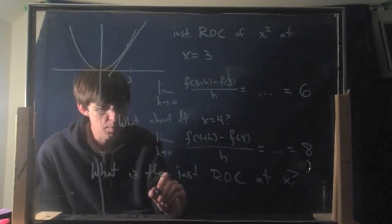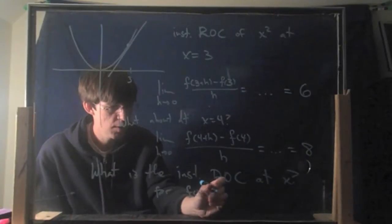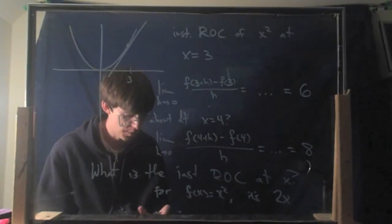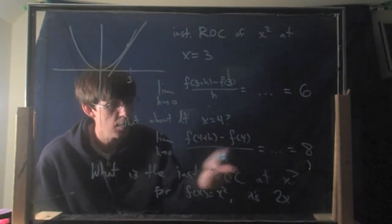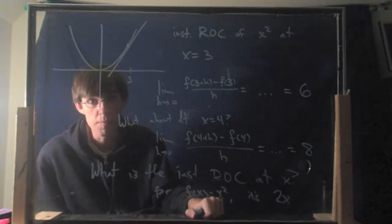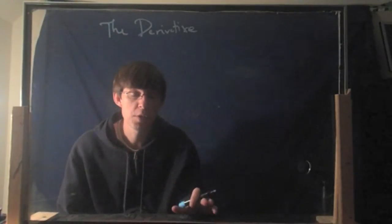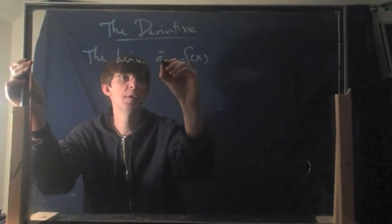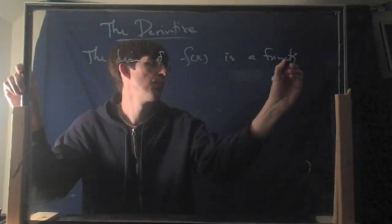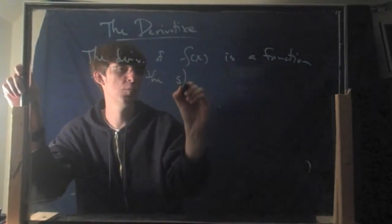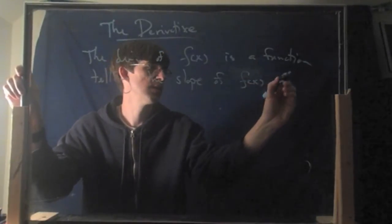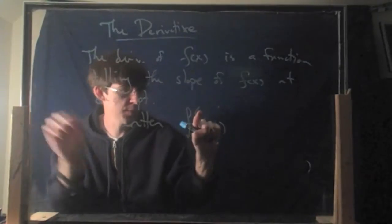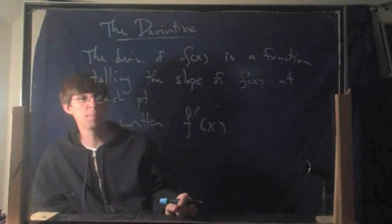So in this example, for this function — let me remind ourselves — for f(x) = x², the slope is 2x. There's actually a name for this function. You start with the first function, x², and this other function is called the derivative. The idea is: the derivative of your first function f(x) is another function telling the slope of f(x) at each point.